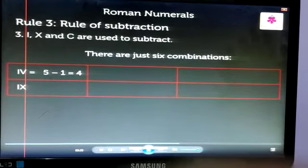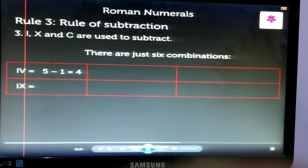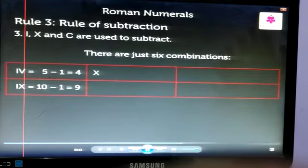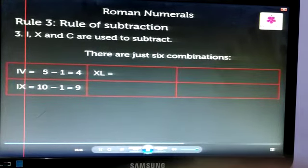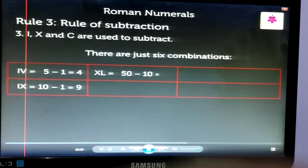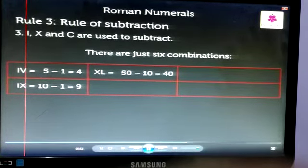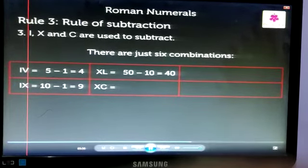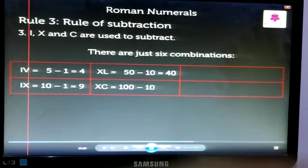XL is equal to 50 minus 10, which equals 40. XC is equal to 100 minus 10, which equals 90.